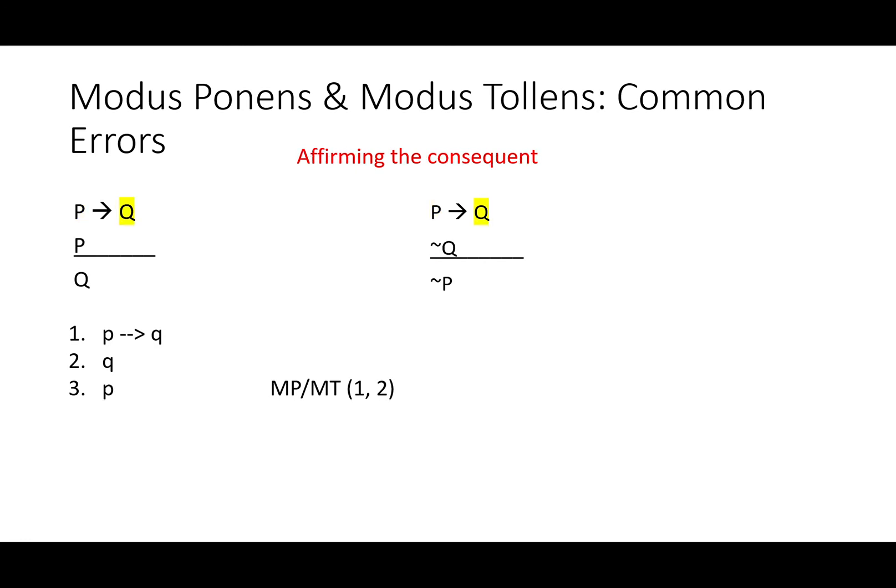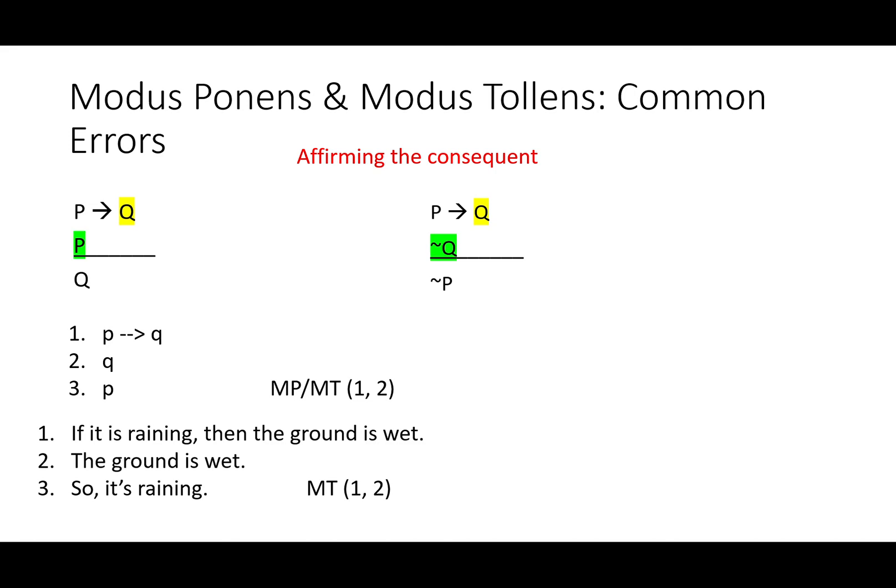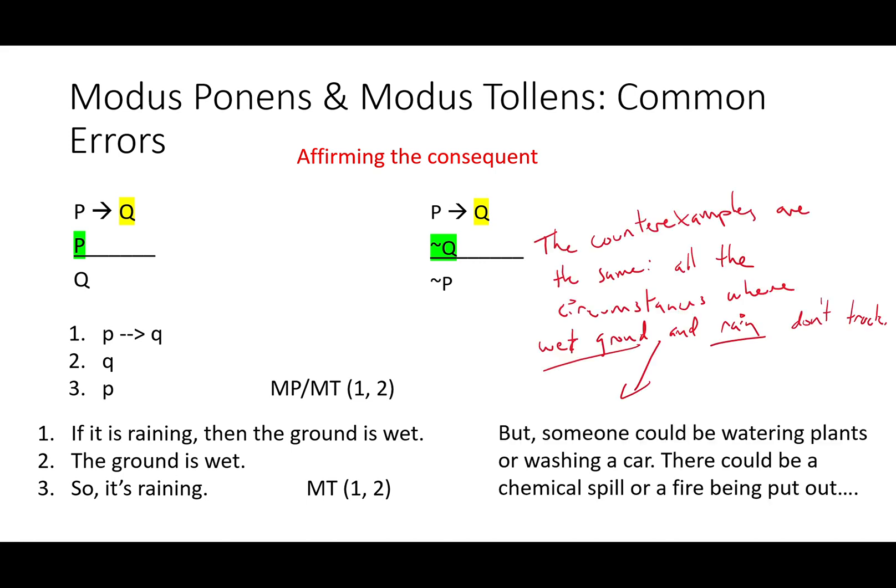Another invalid inference is affirming the consequent: 'if P then Q, Q, therefore P.' It's not clear whether this is modus ponens or modus tollens — which should be a clue it won't work. For example: 'if it is raining then the ground is wet, the ground is wet, so it's raining.' But someone could be watering plants. These counter-examples are the same for both fallacies — they involve circumstances where wet ground and rain don't track each other. When using modus ponens and modus tollens, be careful to avoid these two common fallacies.